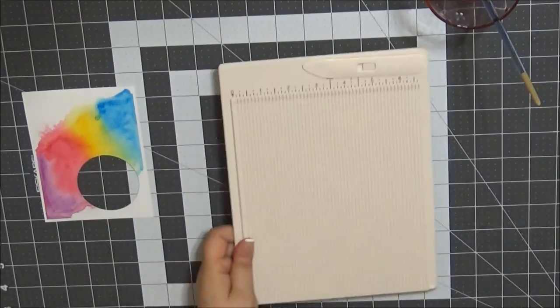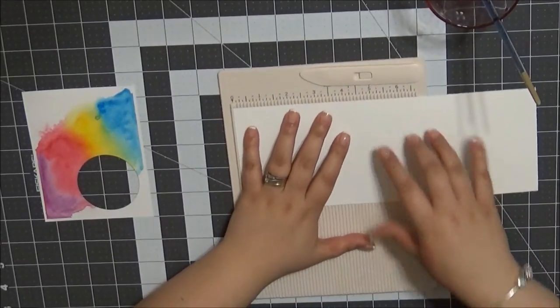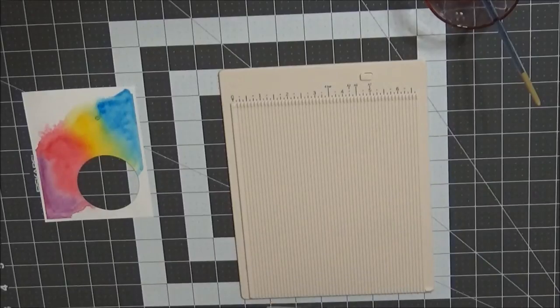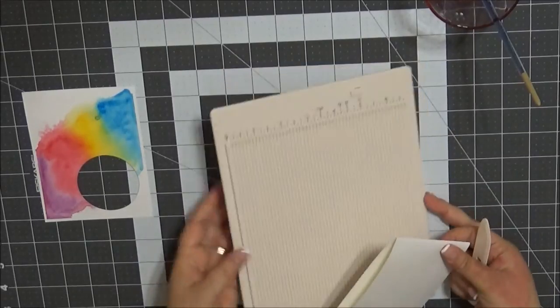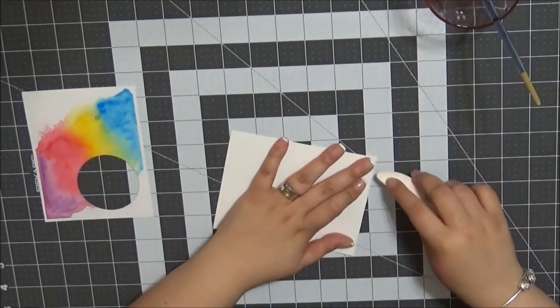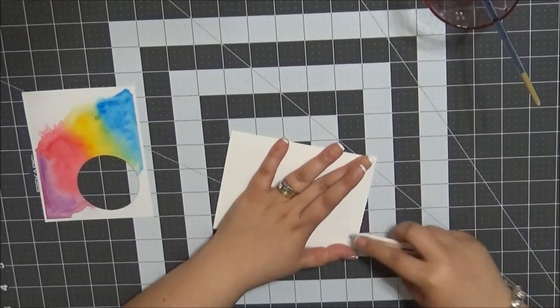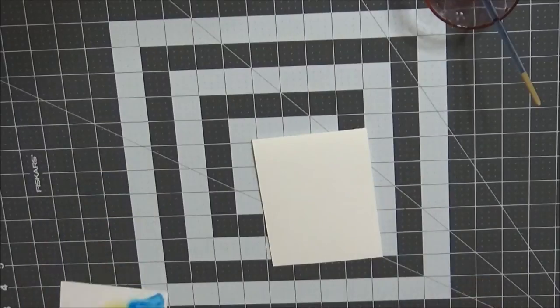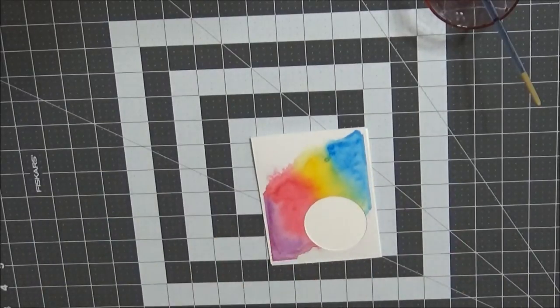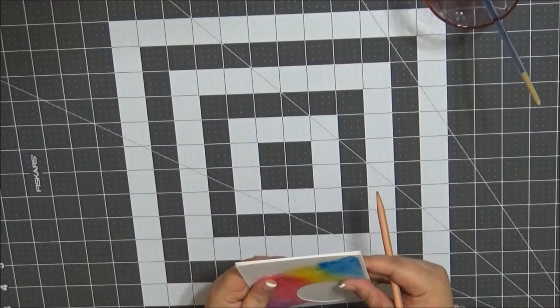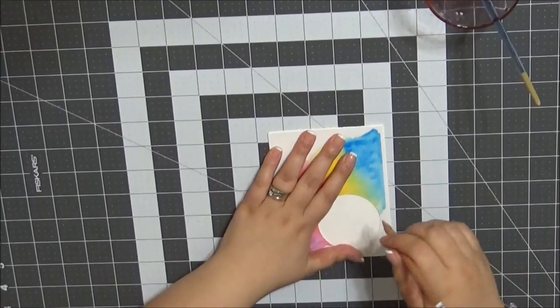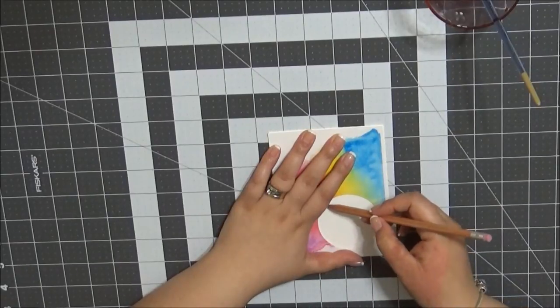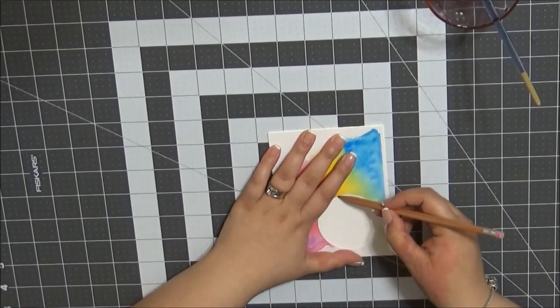Now I'm taking some Neenah Solar White 80 pound cardstock. And it comes in eight and a half by eleven sheets. And I cut it at four and a quarter to make two top folding cards. Scored it at five and a half. And now I'm just taking my bone folder and creasing the top edge.